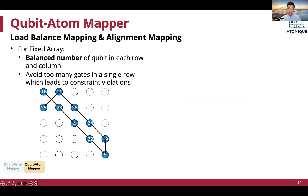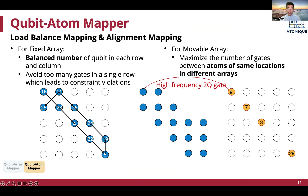In the second step, the qubit atom mapper decides the specific location of each qubit according to two heuristics. For the fixed array, we propose the load-balance mapping heuristic to prioritize locations near the diagonal region of the array, so that the number of qubits per row and column will be balanced, helping increase parallelism. Intuitively, if all atoms are on the diagonal, their locations can be freely changed because no other atoms are in the same row or column. For movable arrays, we propose the alignment mapping heuristic, in which qubit pairs of high-frequency two-qubit gates are mapped to the same location in two arrays, which also increases parallelism.